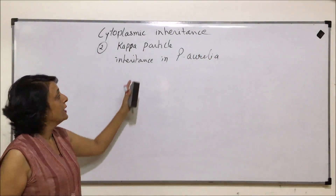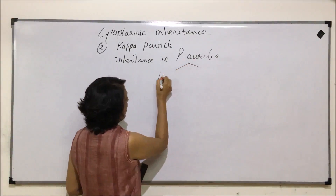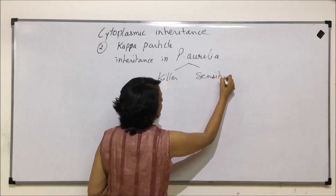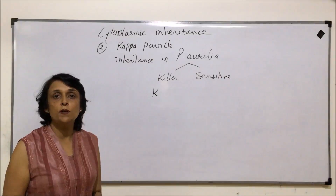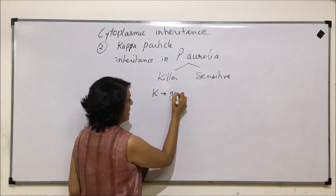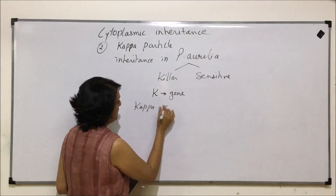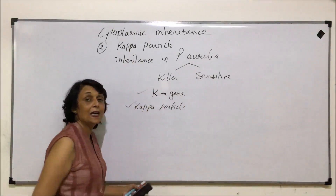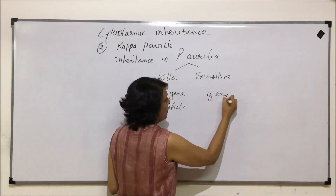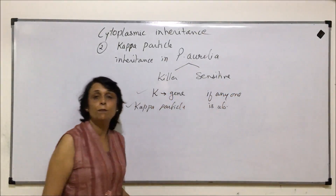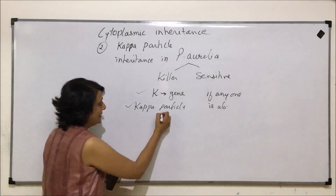Before we take up the inheritance, let us talk about what we are discussing. There are two strains of Paramecium: one is called the killer strain and the other is known as the sensitive strain. Killer strains must have two things: a dominant gene responsible for formation of kappa particles, and the kappa particles themselves. If both are present, that paramecium is of the killer strain; if either is absent, it will be the sensitive strain.